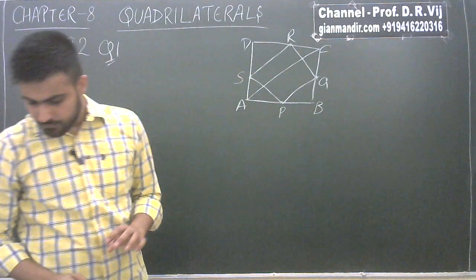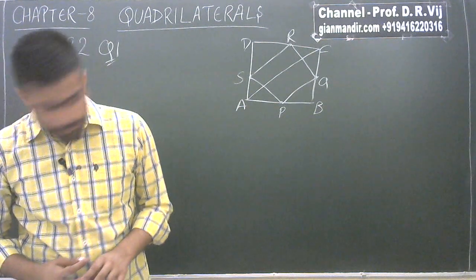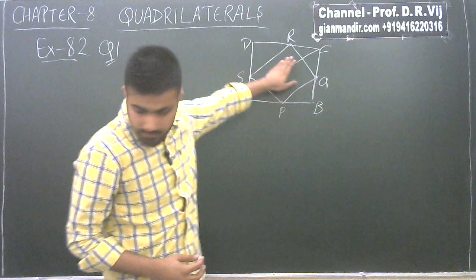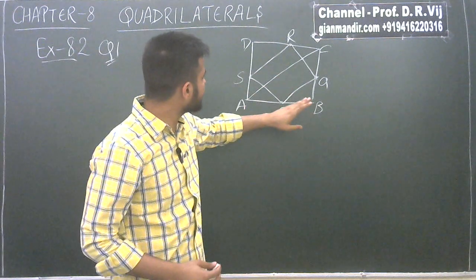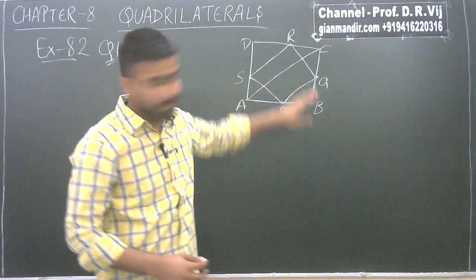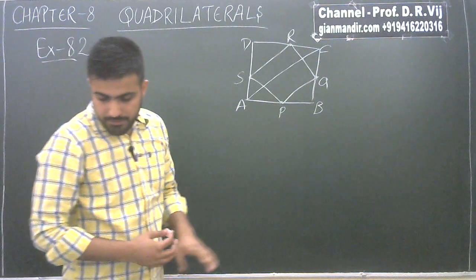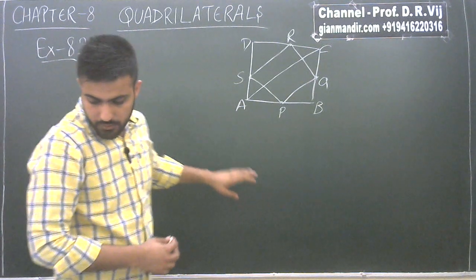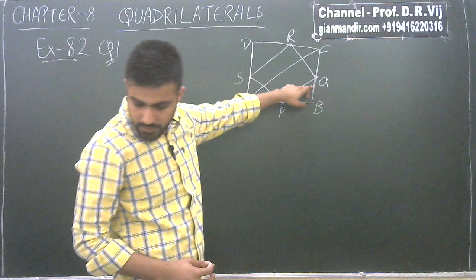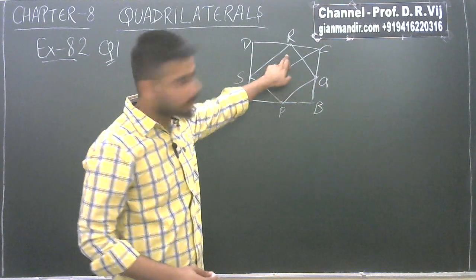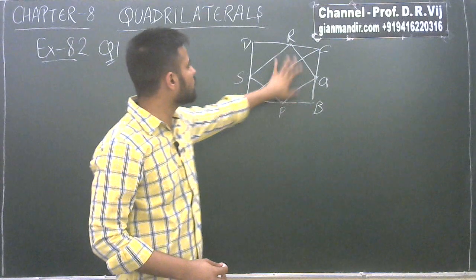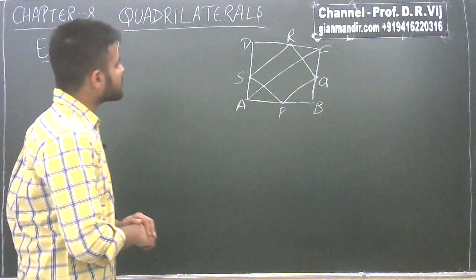So in the first part, we have to prove that SR is parallel to AC, and SR is half of AC. In the second part, we have to prove that PQ is equal to SR. And in the third part, we have to prove that PQRS is a parallelogram.